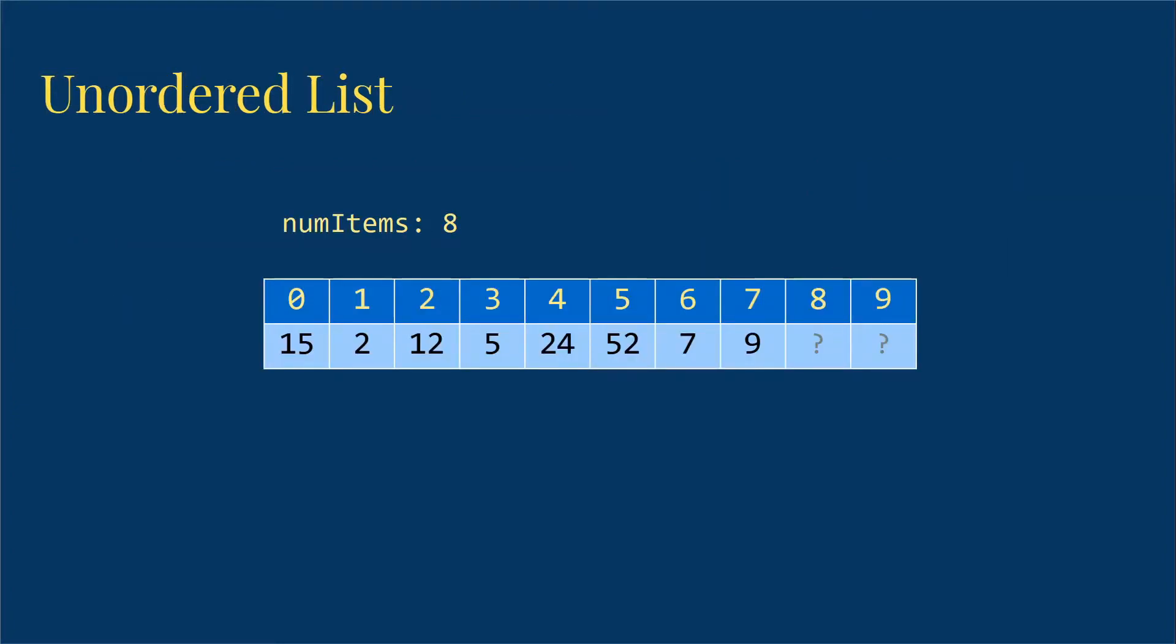We're going to start by looking at an unordered list. So here we have an example. We have an array of size 10 that currently has a list of 8 integers stored in indices 0 through 7.